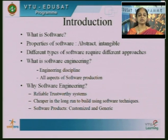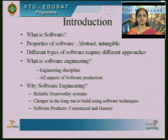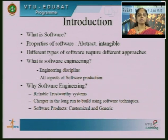We started with the introduction to software engineering — we defined what software is and what its properties are. We stressed that software is abstract and intangible; you cannot see it, feel it, or discriminate it like other physical systems. Different types of software require different approaches to development, and there is no one hard and fast rule that a certain methodology is applicable to all software.